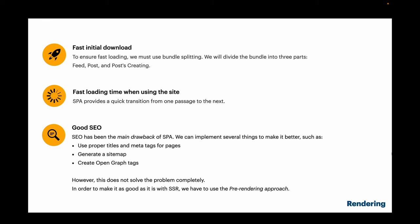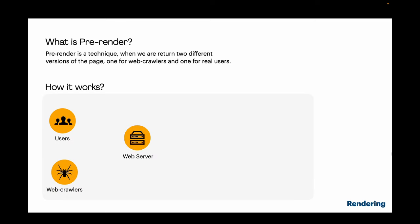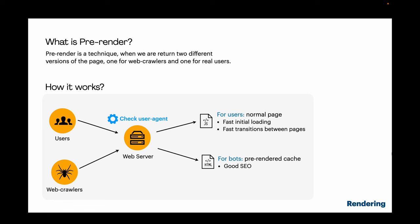To achieve as good results as server-side rendering, we have to use the pre-rendering approach. Pre-rendering is a technique where we return two different versions of the page: one for web crawlers and one for real users. A web crawler is a robot whose goal is to crawl the internet for websites. Since some crawlers may not wait until a page is rendered, for web crawlers we send a page pre-rendered on the server, while real users receive the usual SPA with client-side rendering.